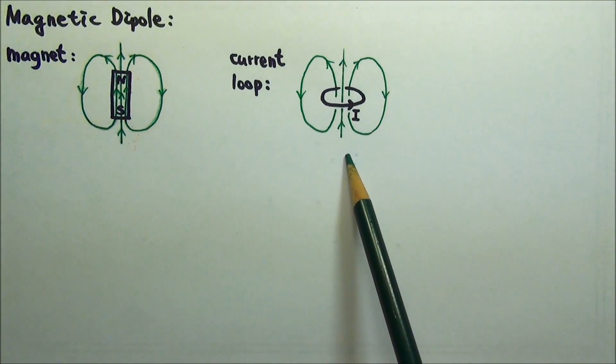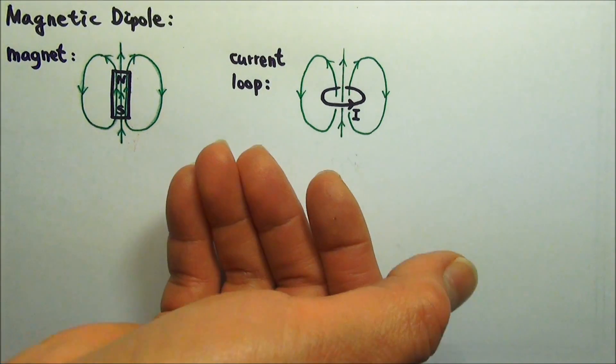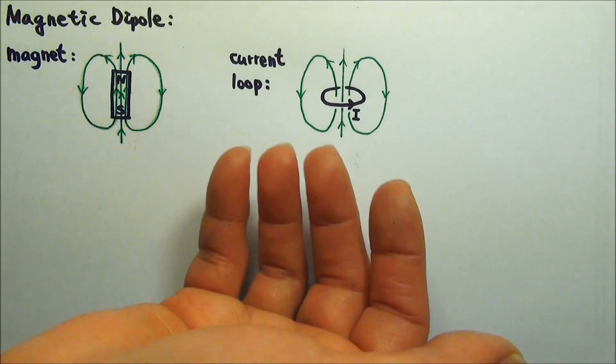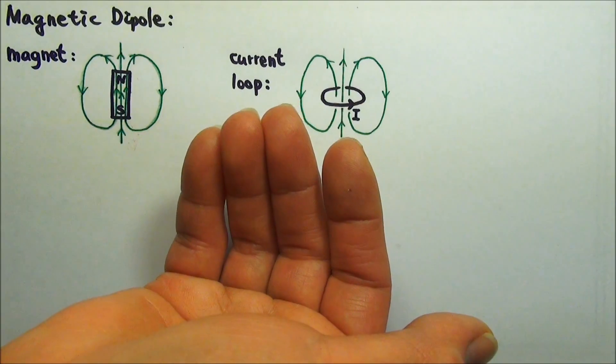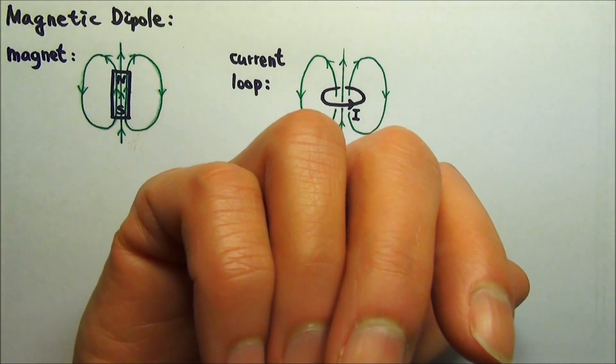A current loop produces similar magnetic field. According to the right-hand rule, if I use my thumb to follow the current in the front, my curved forefingers will go up inside the current loop and downward outside the current loop.